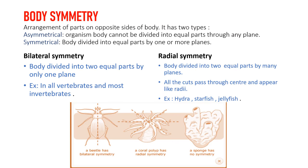The next basis is body symmetry — the arrangement of parts on opposite sides of the body, and whether it can be divided into two equal parts. It has two types: asymmetrical and symmetrical. In asymmetrical, the body cannot be divided into two equal parts. For example, sponges have no symmetry — dividing from any plane does not yield equal parts.